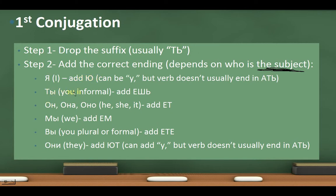For first conjugation endings: for я (I) add У; for ты (you informal) add ЕШЬ; for он/она/оно (he/she/it) add ЕТ; for мы (we) add ЕМ; for вы (you formal/plural) add ЕТЕ; for они (they) add ЮТ — sometimes УТ when the verb doesn't end in АТЬ. This is the general rule of thumb.